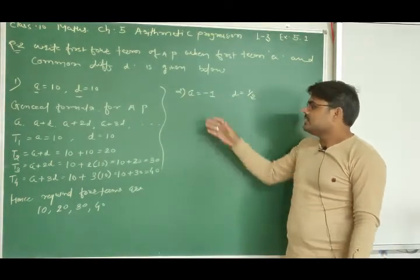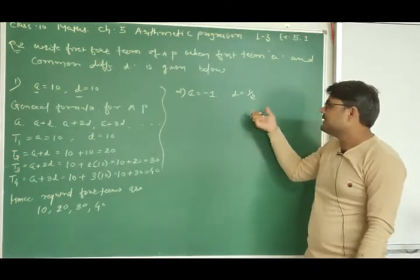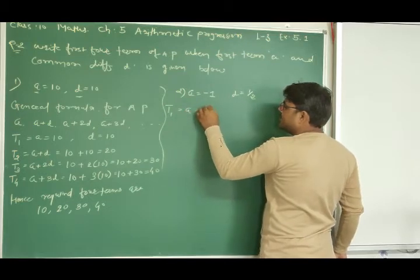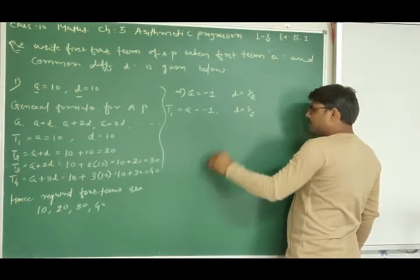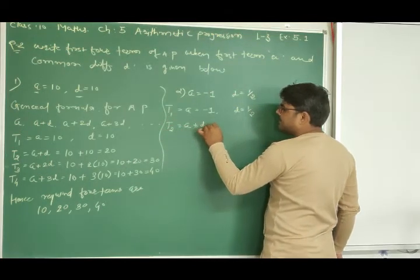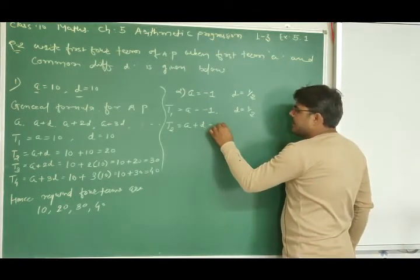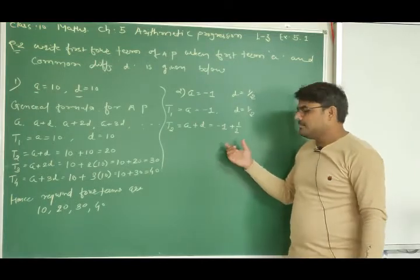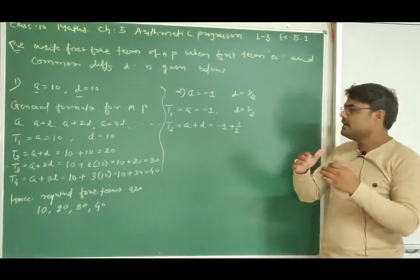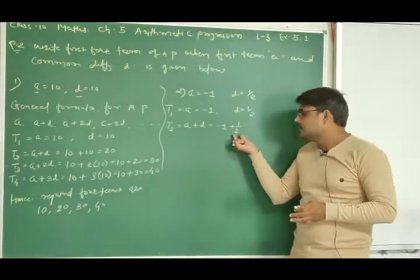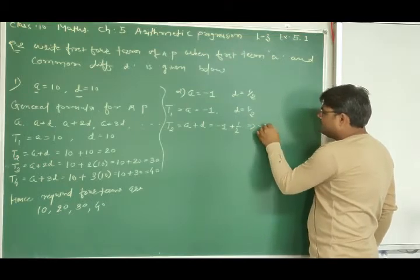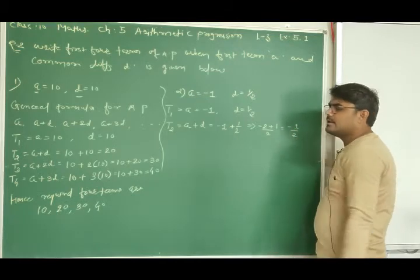Now the second part: same process, first term and difference are given, we repeat the same steps to find four terms. We start with T1 = A = -1 given, D = 1/2 given. The first term is already obtained, no need to find it again. T2 = A + D = -1 + 1/2. Taking LCM gives (-2 + 1)/2 = -1/2. This is our T2.